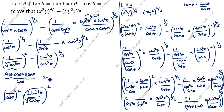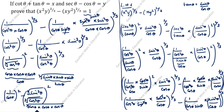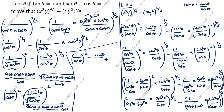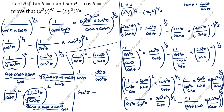Taking cos theta outside, we get 1 by cos theta squared minus sin theta by cos theta squared. This simplifies to 1 by cos squared theta minus sin squared theta by cos squared theta, which equals secant squared theta minus tan squared theta, since sin theta by cos theta is tan theta and sin squared theta by cos squared theta is tan squared theta.